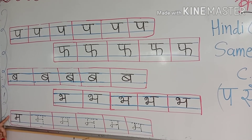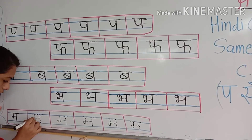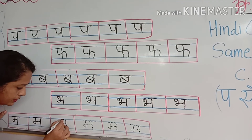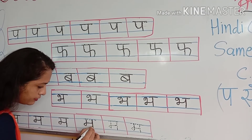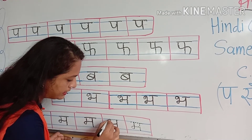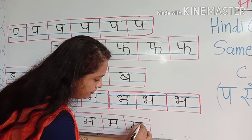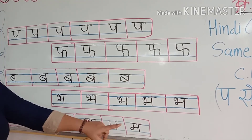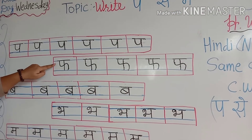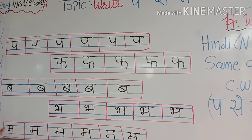Now next. Ye kya hai? Kaunsa word hai ye? Ma. Ma se — machli. Ma se kya hota hai? Ma se machli. Ma. Ma se machli. Aase was — aase bhalu aur aase machli.